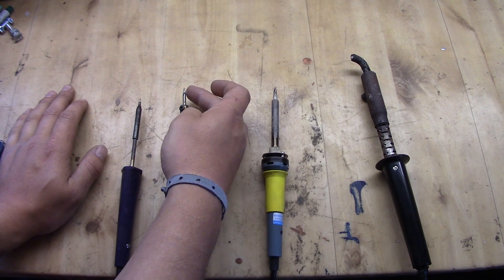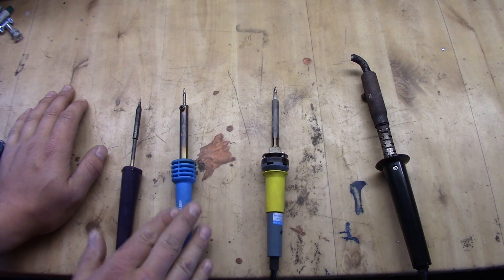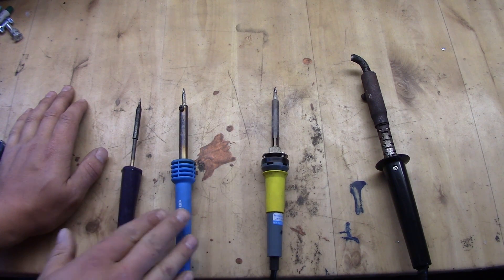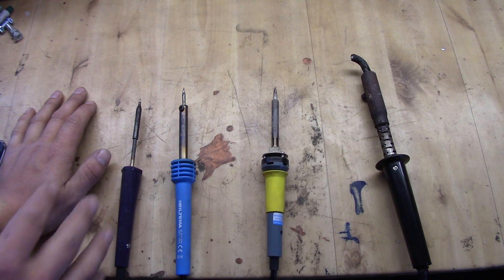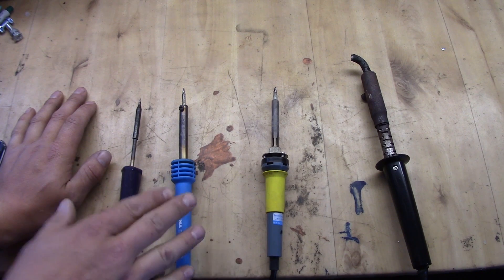It is still a pretty fine tip on this one and this one is an iron that I keep with me and bring with me when I need to go out on the field and solder small wires and stuff like that. And it's perfectly fine.